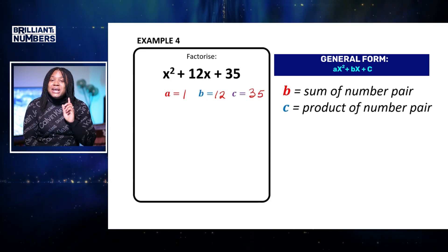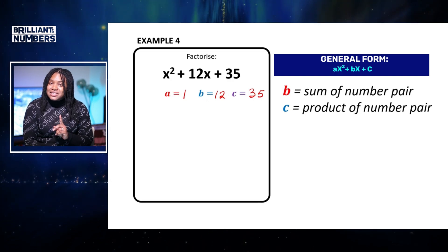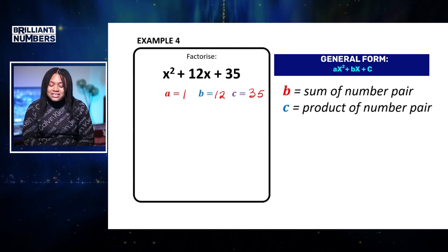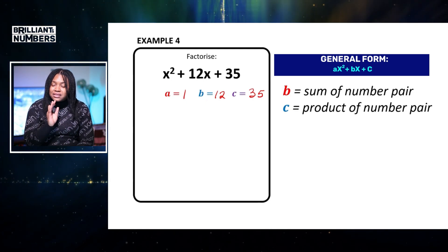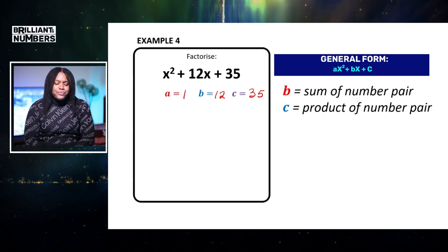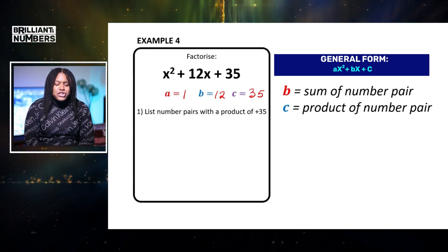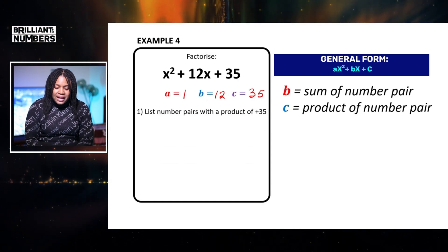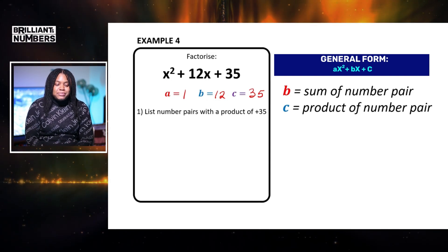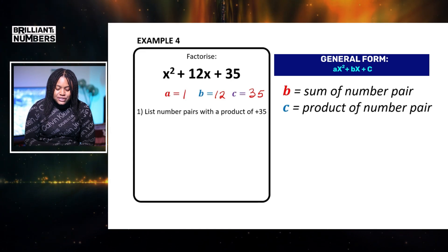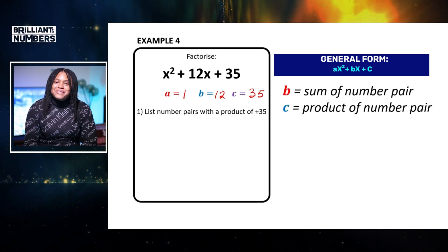Now you can see that we have moved in the complexity of the numbers, larger numbers this time. However, the concept remains the same. So I want to have number pairs with a product of 35. And when I add them together, I want them all to be equal to 12. So let's go ahead and list our factor pair.